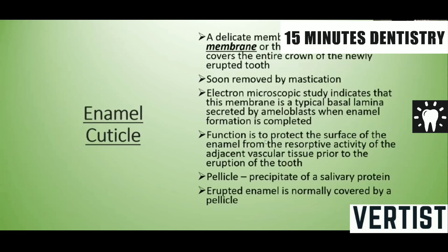Enamel cuticle: a delicate membrane called Nasmyth's membrane or primary enamel cuticle covers the entire crown of the newly erupted tooth. This primary enamel cuticle is soon removed by mastication. Electron microscopic study indicates that this is a typical basal lamina secreted by the ameloblasts when enamel formation is complete. Its function is to protect the surface of the enamel from the effects of adjacent vascular tissue prior to tooth eruption. After eruption, the enamel is normally covered by a pellicle, which is a precipitate of salivary protein.